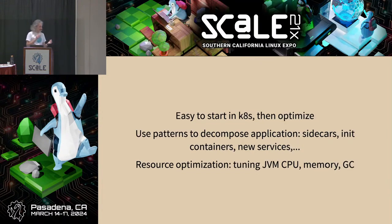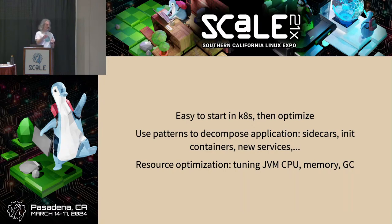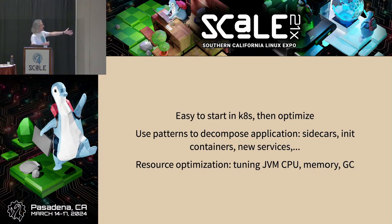To summarize — three things to remember: First, on Kubernetes it's easy to start and then optimize — lift and shift an existing application into a container and run it, with state being the tricky part. Second, use patterns to decompose the application — sidecars, init containers, new services, operators — so you don't have to add things to the monolith. Third, on resource optimization: tune JVM heap, CPU active processor count, and garbage collection, and use all the autoscaling capabilities Kubernetes provides.